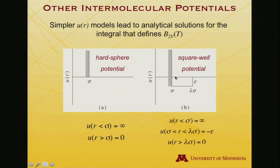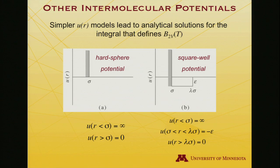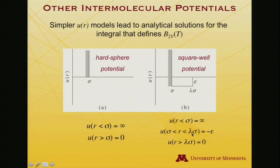An alternative is to still have the repulsive wall at sigma — hard sphere contact — but over some interval as one sphere departs from the other, there is an attractive interaction. It's constant, so it's called a square well potential because there's a well below zero in the potential, but it has a flat bottom, and it goes for a certain distance then ends. Mathematically: for r less than sigma, infinite potential; between sigma and some multiple lambda times sigma, the potential is minus epsilon, meaning attractive; and beyond that multiple of sigma, it's zero again.